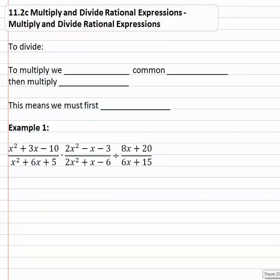In this video we're going to look at multiplying and dividing rational expressions in the same problem. Now we know to divide we have to multiply by the reciprocal. So after we do that we really just have a big multiplication problem. And we know to multiply we have to divide out common factors and then multiply what's left across.